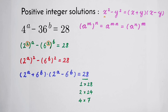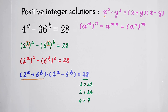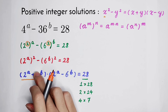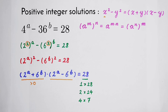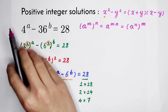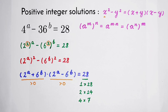Why does it have to be written as a product of two positive integers? Because 2 to the power of a and 6 to the power of b, even when a and b are real numbers, are both always positive. So their sum is always positive, greater than zero — and since 28 is also positive, 2 to the power of a minus 6 to the power of b must also be positive. Since a and b are both positive integers, both factors are positive integers.